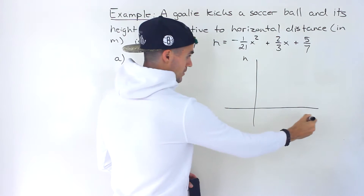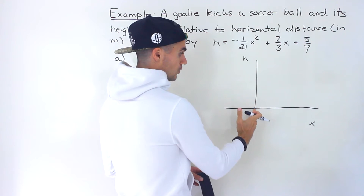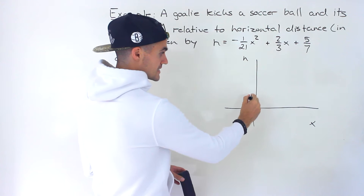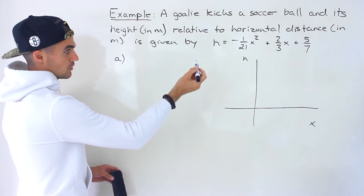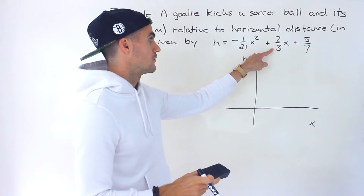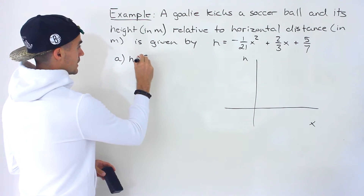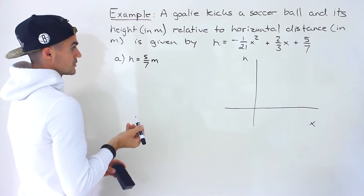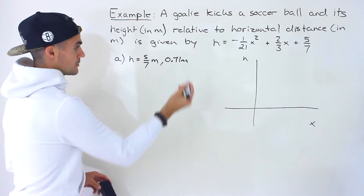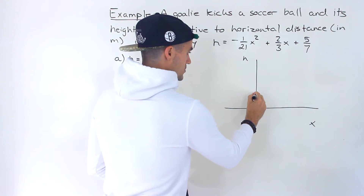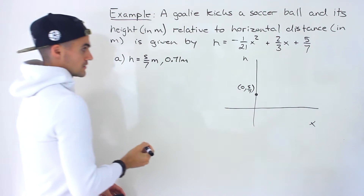x represents the horizontal distance from the goalie. So if the goalie is kicking the ball initially, the horizontal distance is going to be zero — they're standing on the h-axis. So we plug in zero for all the x values. Those terms go to zero, and you're left with 5 over 7. So h, the initial height, is 5 over 7 meters, approximately 0.71 meters. I'll keep it in fractions. So that coordinate is (0, 5/7).